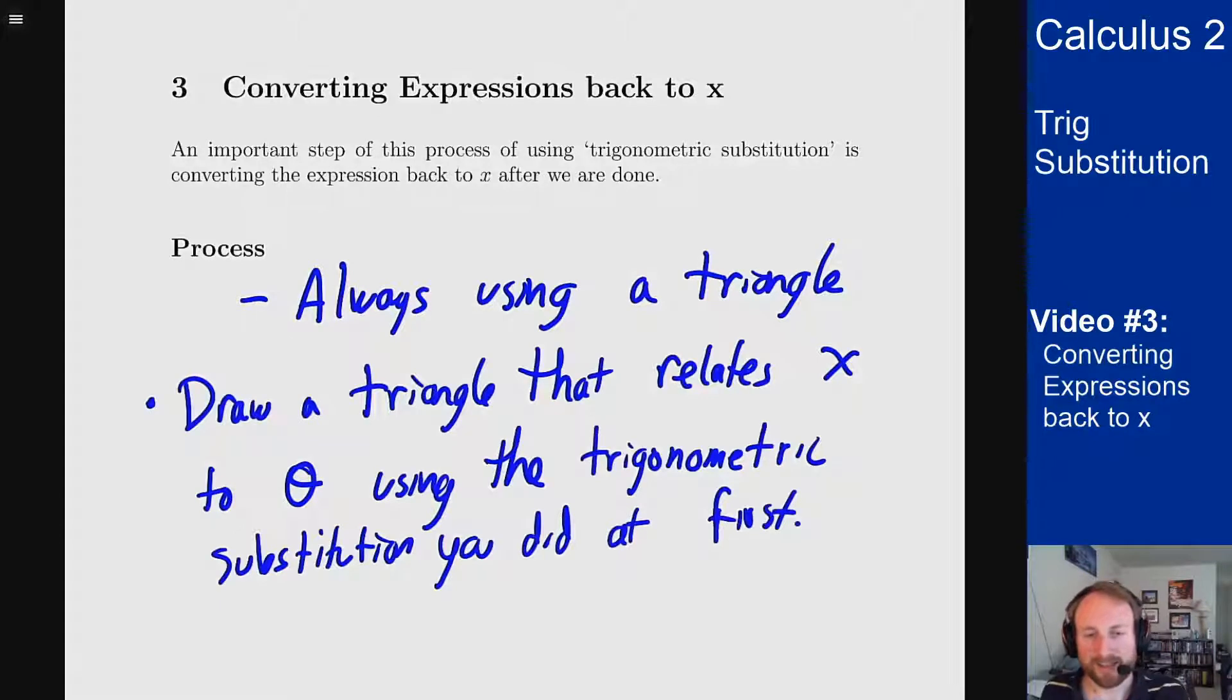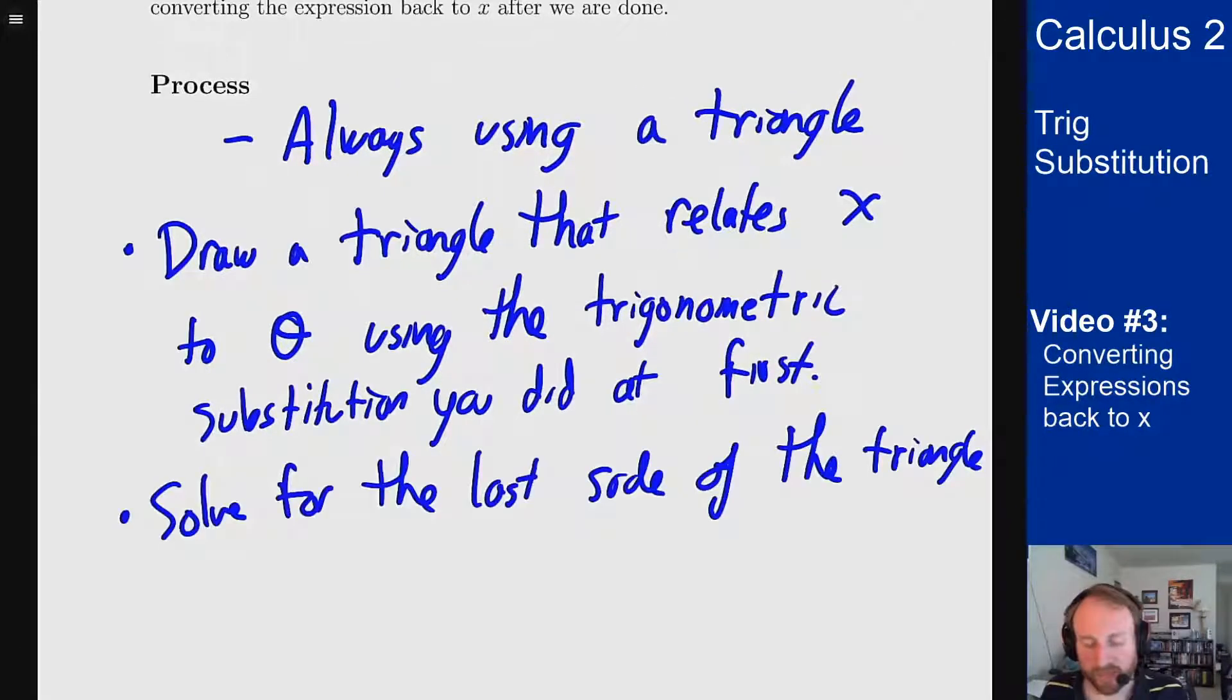You'll then need to solve for the last side of the triangle. And then once you have all three sides, it's really easy to figure out what any trig function is in terms of x. You just read it right off the triangle. If it's sine, you look opposite over hypotenuse, and you get what the expression should look like.